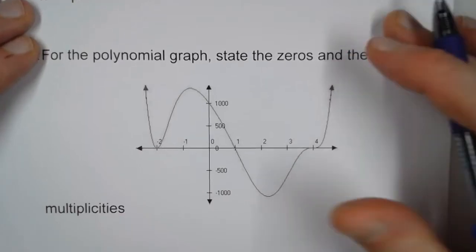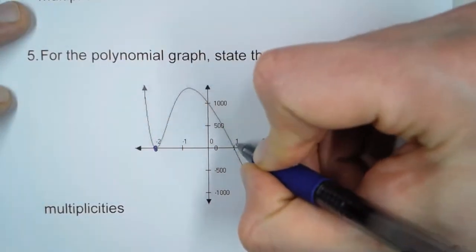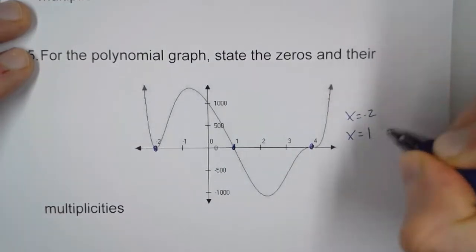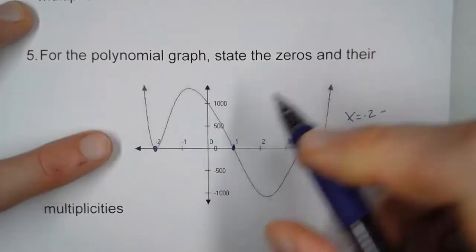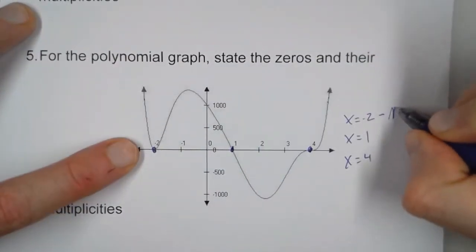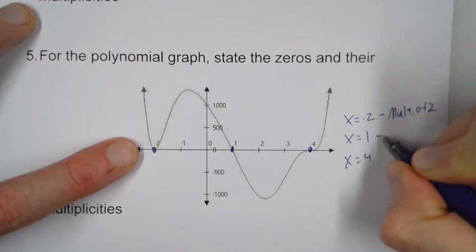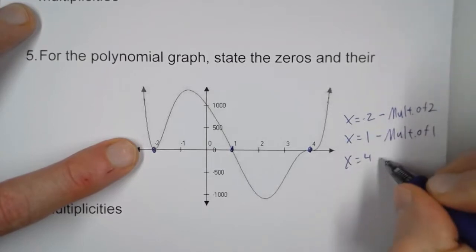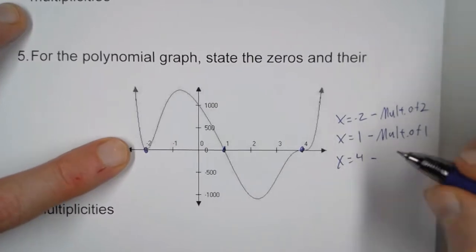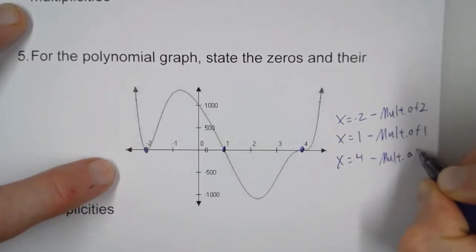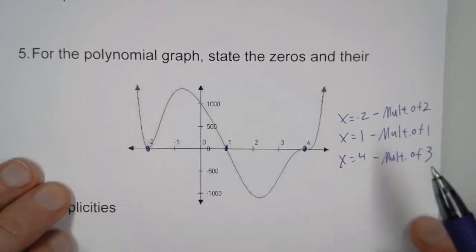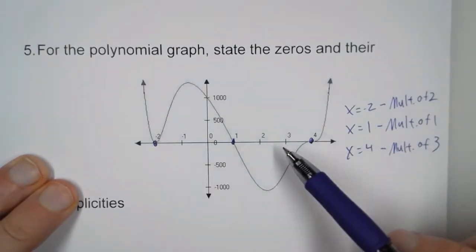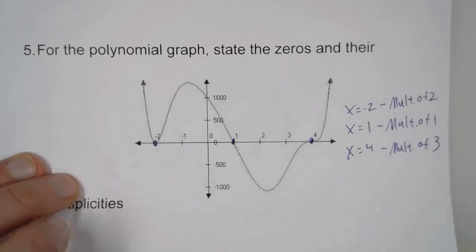For number five, we've got three locations: negative two, one, and four. At negative two, like we saw above, this looks like x-squared, so this has a multiplicity of two. At one, it just crosses through, so this has a multiplicity of one. Now at four, this mimics an x-cubed graph, so that means this has a multiplicity of three. So anytime it mimics an x-squared graph when it touches the x-axis, it's multiplicity two; when it mimics x-cubed, it's multiplicity three.